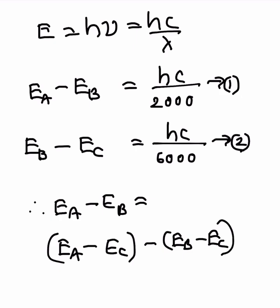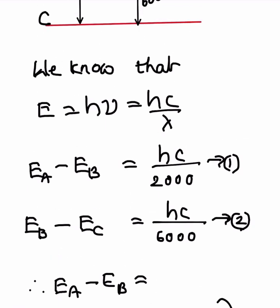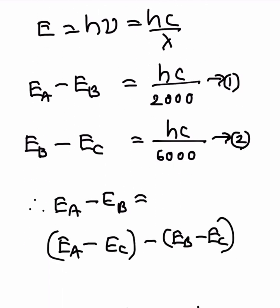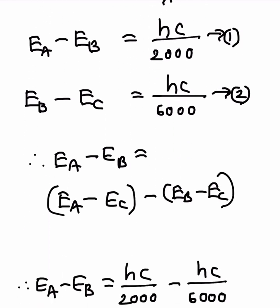For the transition B to C at 6000 angstroms, E_b minus E_c equals h·c divided by 6000. So we now have two equations: Equation 1 — E_a minus E_c equals h·c over 2000, and Equation 2 — E_b minus E_c equals h·c over 6000.